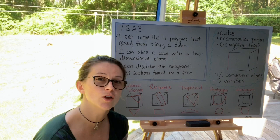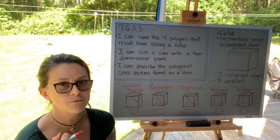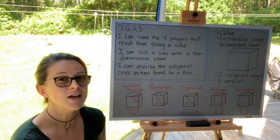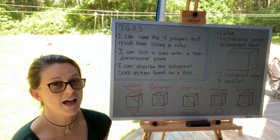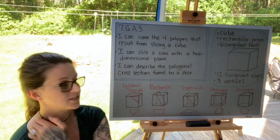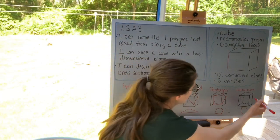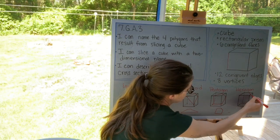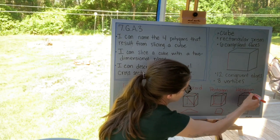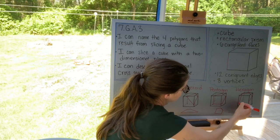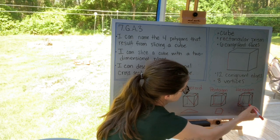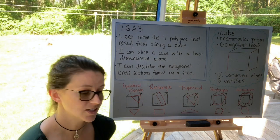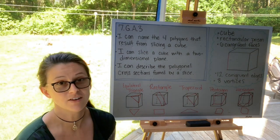Finally, the hexagon. This is the most sided polygon we can form by slicing a cube, since a cube has six faces — the polygon cannot have more than six sides in a slice. We are going to connect six points that cut through all six faces of the cube.